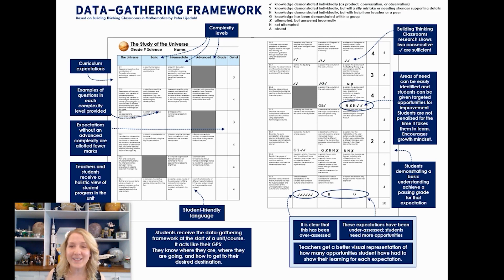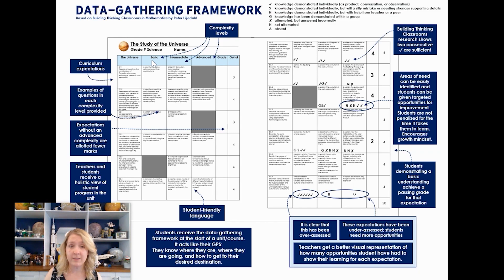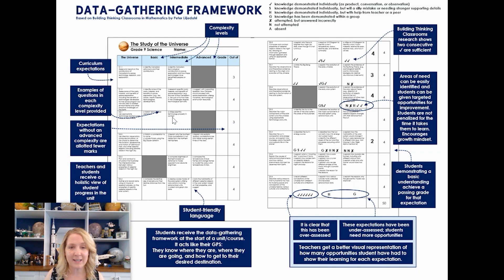Here is my heavily annotated data gathering framework. We still have the curriculum expectations along the left side of each page, and then we've translated those into basic, intermediate, and advanced complexity levels in language that's friendly for students. What you'll notice is that if there is an expectation that doesn't have an advanced complexity level, it's no longer out of four — it's now out of three. That way students can perform 100% by getting three out of three by meeting the intermediate complexity level.